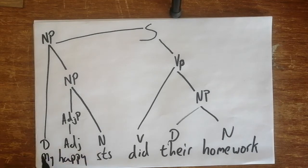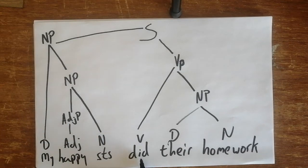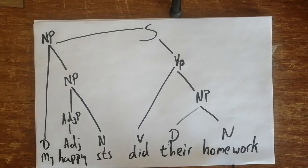So 'my happy students did their homework' - 'my' pertains to both 'happy' and 'students', that's the kind of syntactic structure there, and 'did' requires 'their homework'. Okay, good. Well, I hope this information helps, guys.